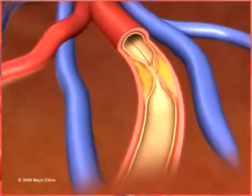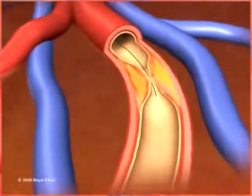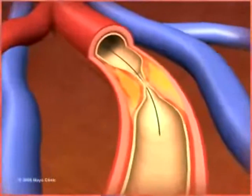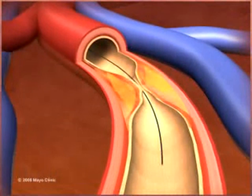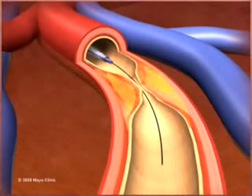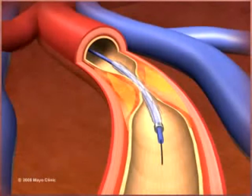A thin, flexible metal wire is then advanced through this tube and past the site of blockage in the artery. A second, smaller catheter is then inserted over the wire and threaded to the same artery.